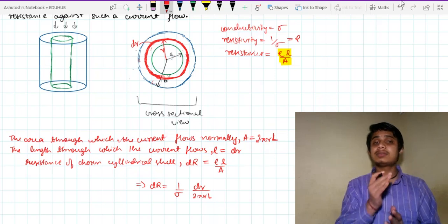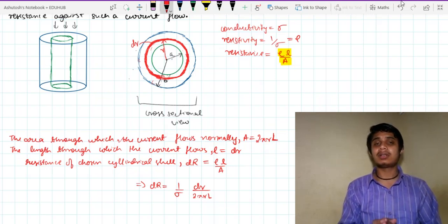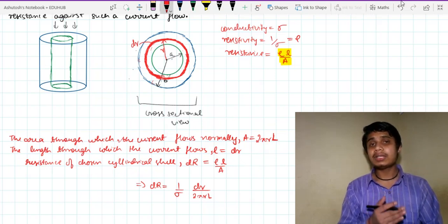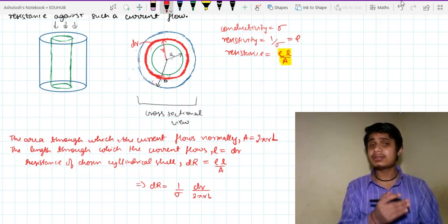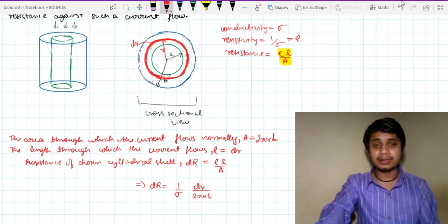This is the resistance of this small cylindrical element which we have chosen. But what we need to find is the resistance of this whole system. So we will integrate it and our task is done.